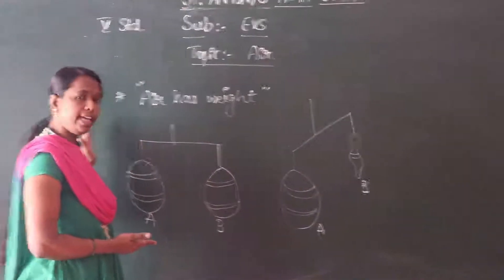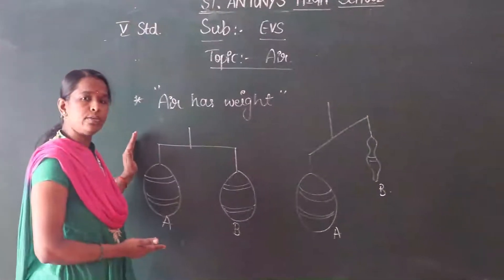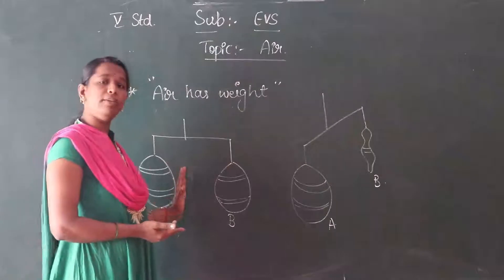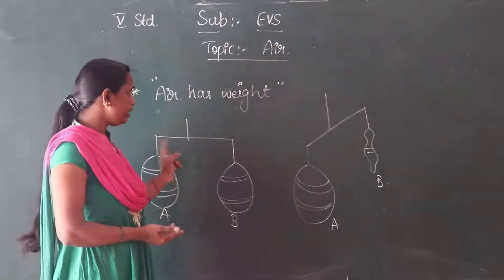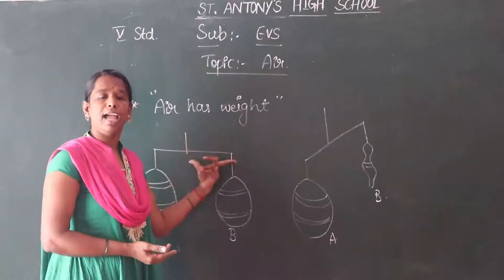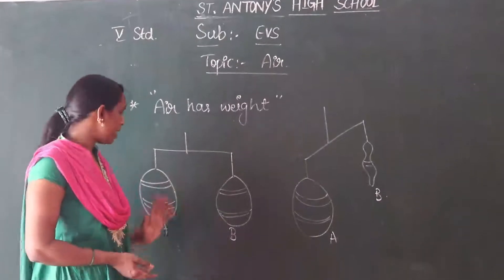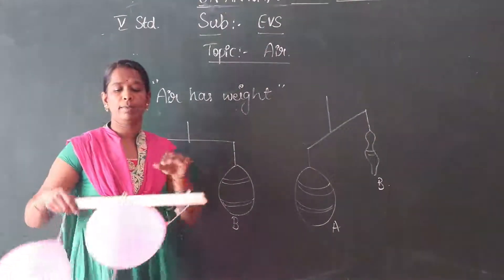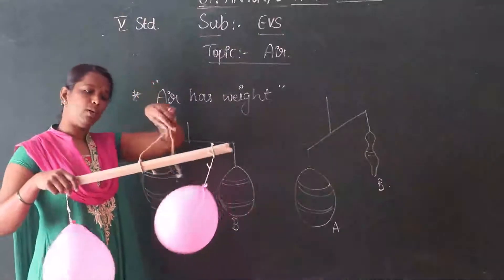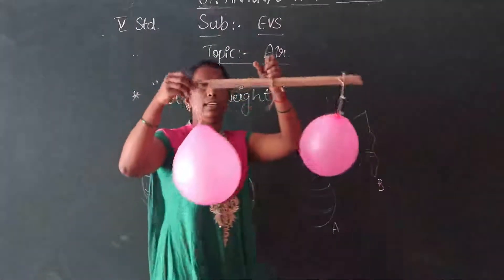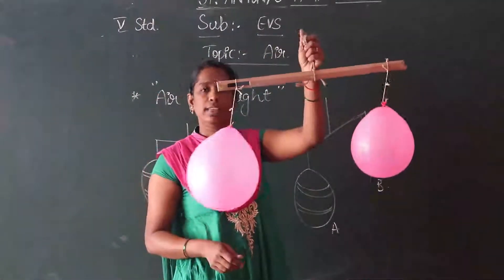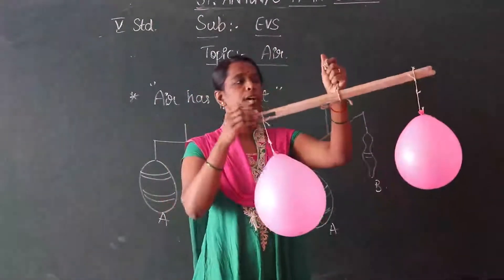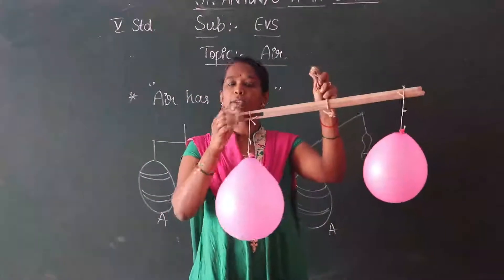As I already explained in the last class, we have to take two balloons filled with air and tie them to a stick with the help of a thread, as shown in the figure. I will arrange this experiment and tie both the balloons at each end of the stick. The balloon is fitted with air.